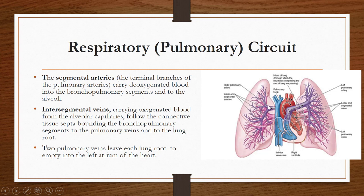To summarize the pulmonary circuit: pulmonary arteries carry deoxygenated blood to the bronchopulmonary segments and alveoli through segmental arteries. In the alveoli, oxygenation occurs. Oxygenated blood is then carried through intersegmental veins into the pulmonary veins, which drain into the left atrium. From the left atrium it goes to the left ventricle, then into the aorta — first the ascending aorta, then arch of aorta, then descending thoracic aorta — supplying oxygenated blood all over the body.